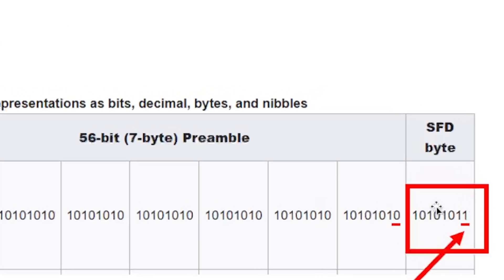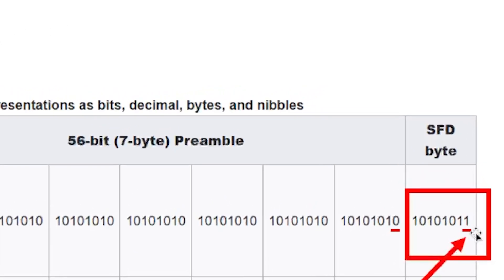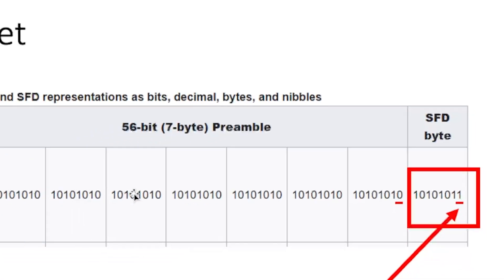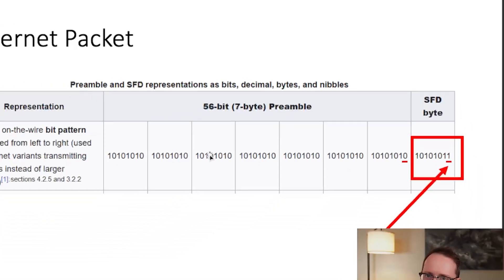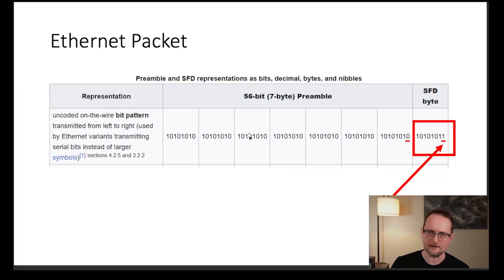If you look close, you'll notice that the eighth byte called the start frame delimiter or SFD is a little bit different. The last bit is a one instead of a zero. This lets the receiving computer know that everything is set up and we're ready to go. Next, we'll get into the fun part where I'll demonstrate how to send a signal down an ethernet cable.